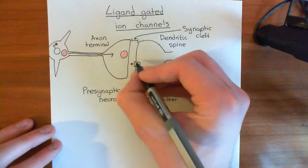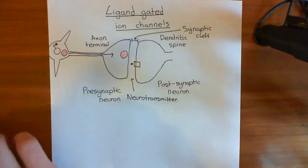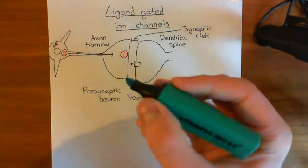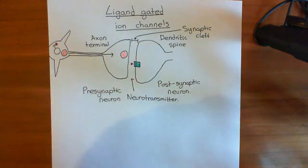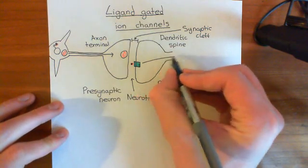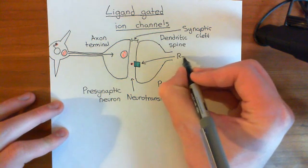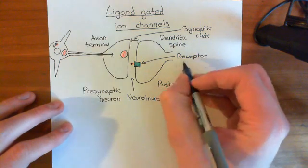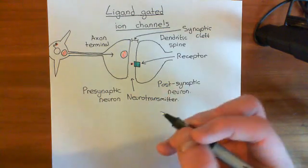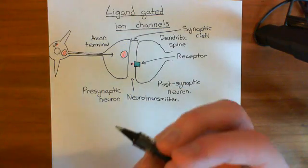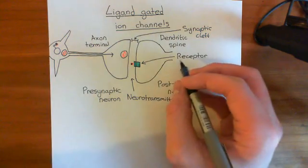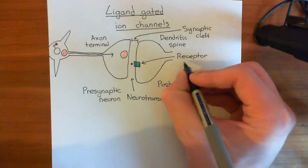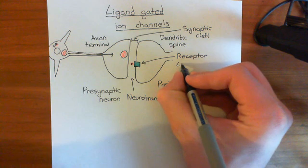These receptors are most often ligand-gated ion channels. There are other types of receptors, such as G-protein-coupled receptors, but usually they are ligand-gated ion channels — and that's the topic for this video. We're going to assume it's a ligand-gated ion channel receptor rather than a G-protein-coupled receptor, a receptor tyrosine kinase, or a steroid receptor, as no neurotransmitter generally acts on steroid receptors.